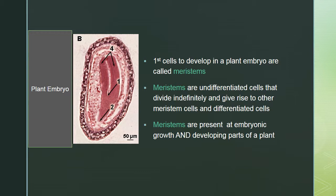When the plant starts to develop it has what we call meristems — think of them like stem cells. The first cells to develop in a plant embryo are called meristems. They're undifferentiated, can divide indefinitely, and give rise to other meristematic cells or to specific differentiated cells. Meristems are present at embryonic growth and in the developing parts of a plant.